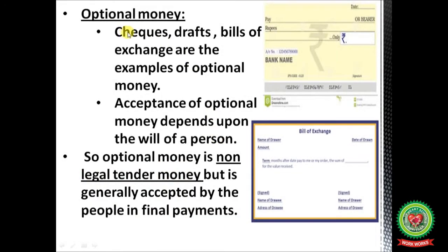Optional money includes checks, drafts, and bills of exchange. Acceptance of optional money depends upon the will of a person — it is non-legal tender money but is generally accepted by people in final payments.